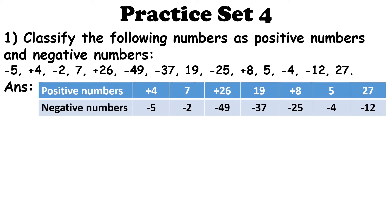Here are some given numbers we have to classify as positive or negative. The positive numbers are: +4, 7, +26, 19, 8, 5, and 27. The negative numbers are: -5, -2, -49, -37, -25, -4, and -12. Numbers with the minus sign are negative, and numbers with the plus sign or no sign are positive.